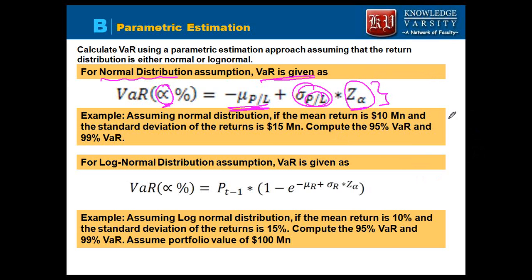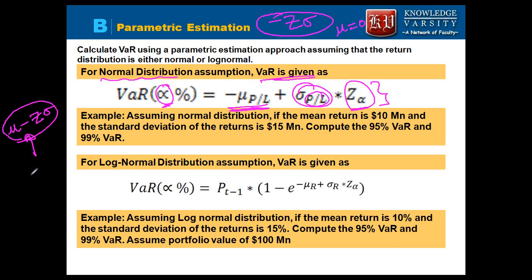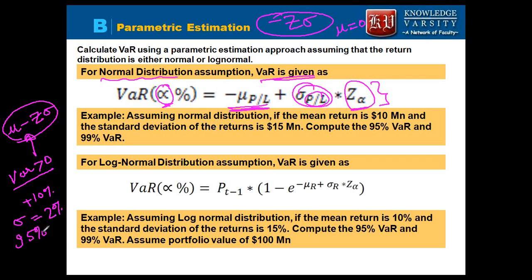In Part 1 we used minus Z sigma assuming a mean return of zero. When the mean is not assumed to be zero, the formula becomes mu minus Z sigma. One issue with this approach is when VaR computes to a positive value — for example, if mean return is 10% and standard deviation is 2%, and we compute VaR at 95% confidence.